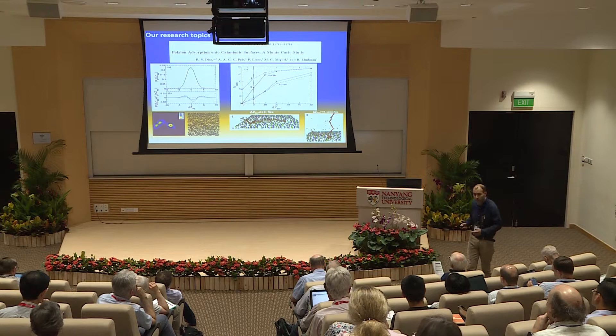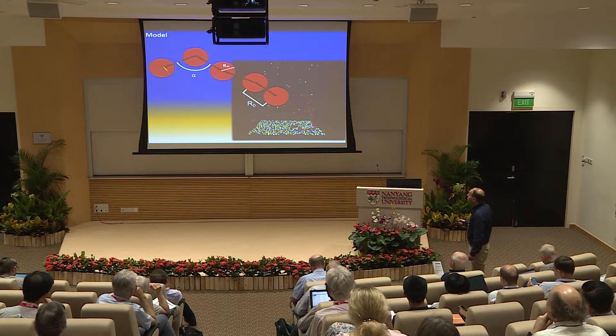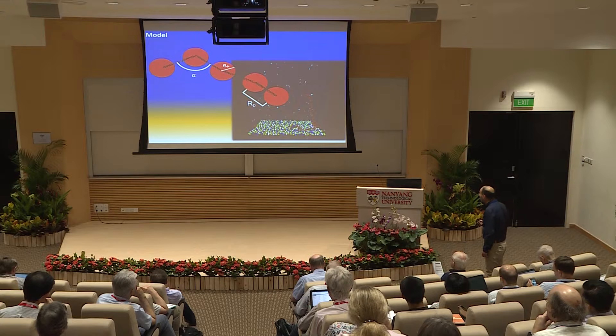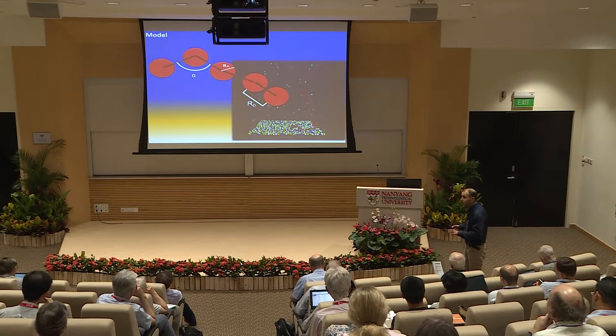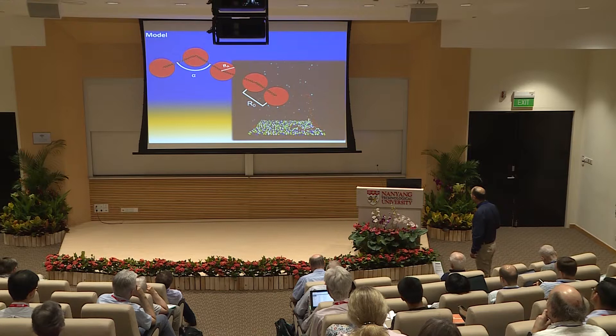The model used is very simple — a spring-and-bead model. We have mobile charges. We have added, now in this work, also some crowders that are not charged. And we have negative and positive charges, and we have the polyelectrolyte. So, a very, very simple model.